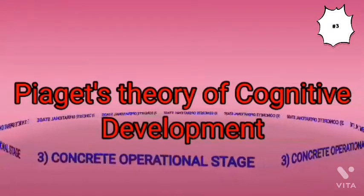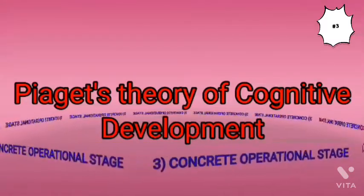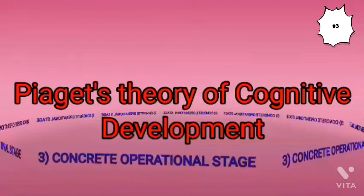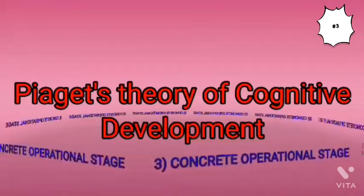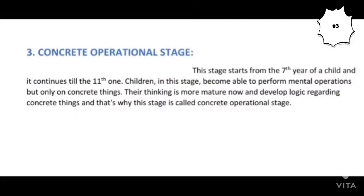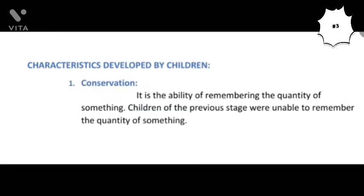Welcome to the channel Platform of Learning Linguistics. Today we are going to talk about the third stage of Piaget's theory of cognitive development: the concrete operational stage. This stage begins from the seventh year of a child and continues till the eleventh. In this stage, children's thinking becomes logical and their reasoning is no longer immature, except regarding abstract things. That is why this stage is called the concrete operational stage — they are still unable to perform logical or mental operations on abstract things, concepts, ideas, etc.